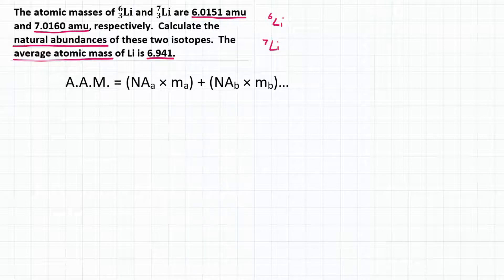we can calculate the natural abundances of the two isotopes. Now looking at our equation down here, we're going to be missing the natural abundance of A, which we'll say is lithium-6, and we're also not going to have the natural abundance of lithium-7, our other isotope. So we have two unknowns, two variables. So how we're going to solve this problem is by realizing that we have two percentages that are going to add up to 100%. So we're going to denote the natural abundance of lithium-6 as 1 minus X, and we're going to denote the natural abundance of lithium-7 as just X.